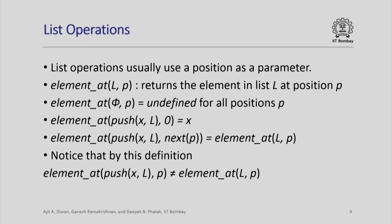Here is an example of an operation which finds the element in the list l at position p. We call this operation element_at, where l is a list and p is a position, and this returns the element in the list l which occurs at position p. If the list is empty then there is no element at any position, so element_at(empty, p) is undefined for all positions p.